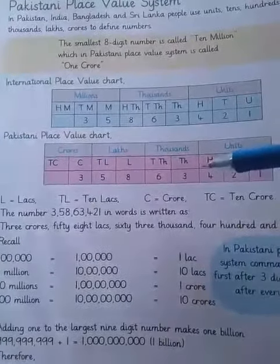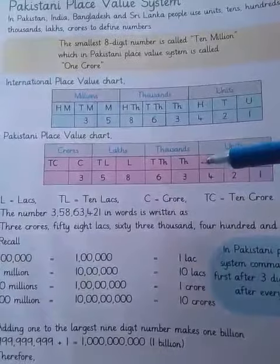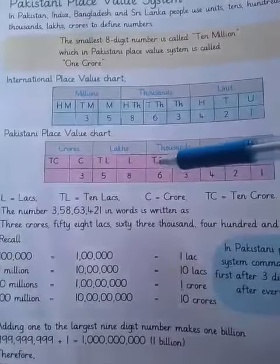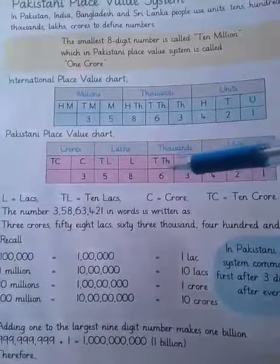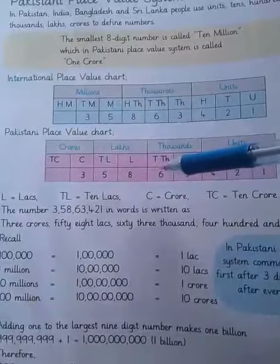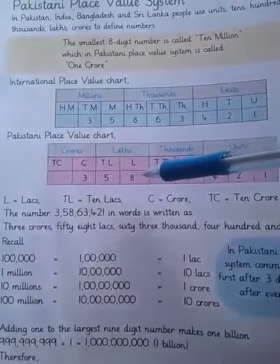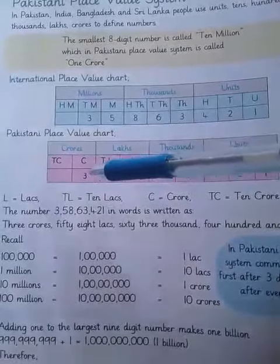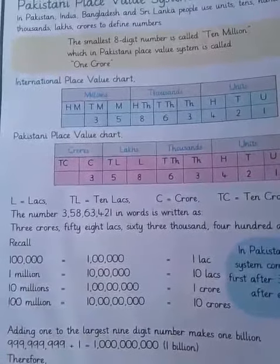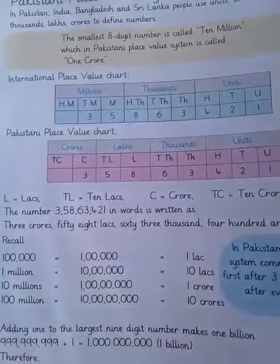In the Pakistani place value chart, the first three values are units. After three values of units, there are two digits for thousands — like 63 — then a comma, then two digits for lakh, then crore. For the solution, look here at the exercise.